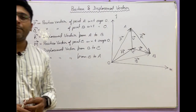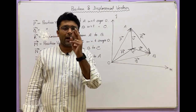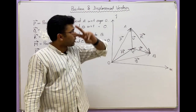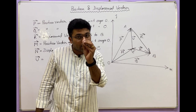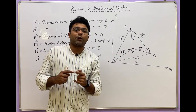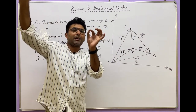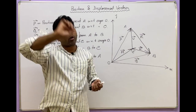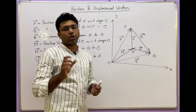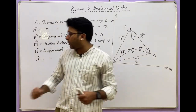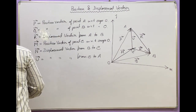So in this video the key idea is: for a position vector, I always focus on the origin — the vector goes from the origin to a particular point. For a displacement vector, there is no requirement to start from the origin — it connects any one point to another.